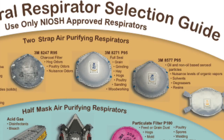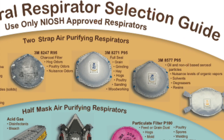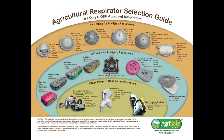The R95 mask will start to filter some oils, and the P95 will filter oils at a very high level as you breathe in. The letters mean: N is non-resistant to oils, R is somewhat resistant to oils, and P is strongly resistant to oils that may filter through your respirator.